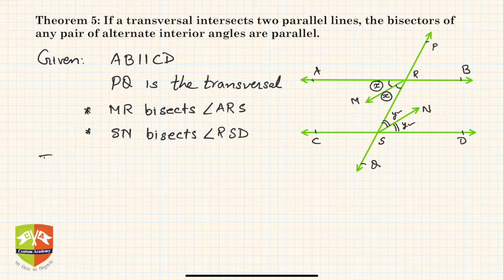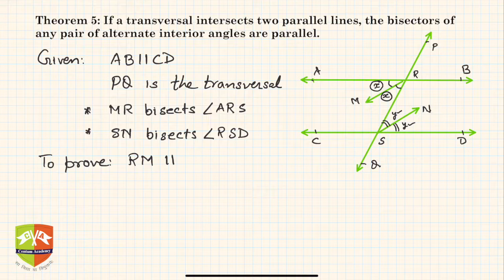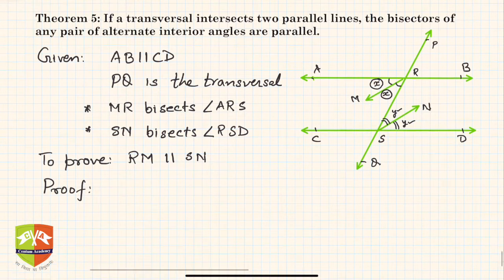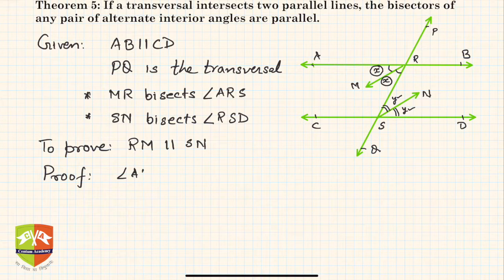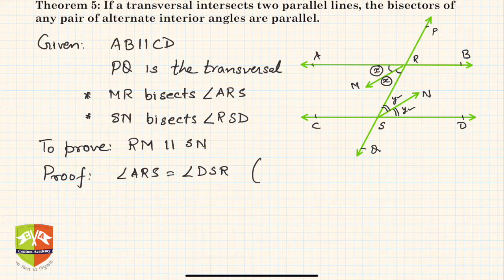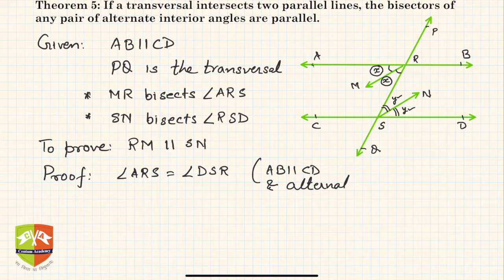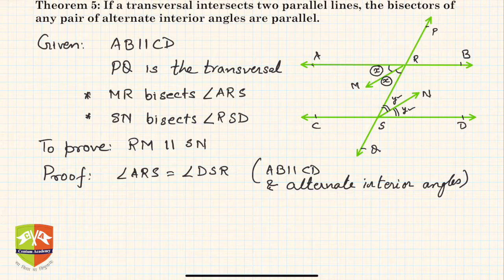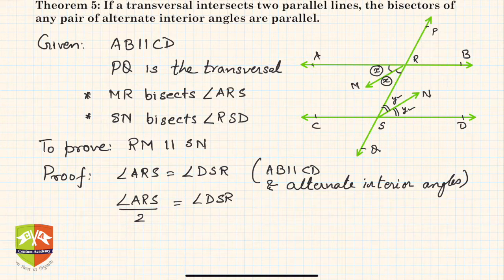What is to be proven? We have to prove that RM is parallel to SN. So let's begin the proof. Angle ARS equals angle DSR, because AB is parallel to CD and these are alternate interior angles. Alternate interior angles are equal, so we can write angle ARS divided by 2 equals angle DSR divided by 2.